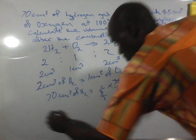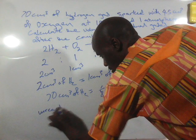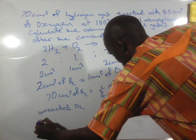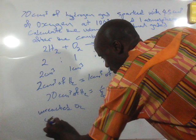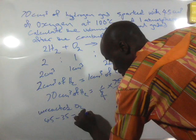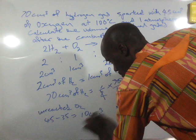The volume of unreacted oxygen will be 45 minus 35, which gives us 10 cm³.